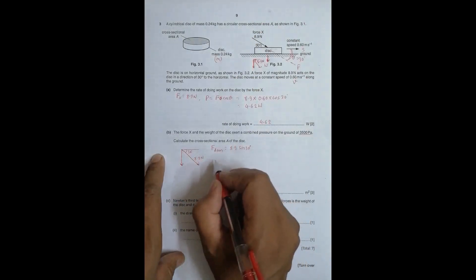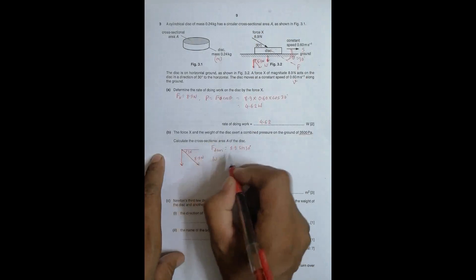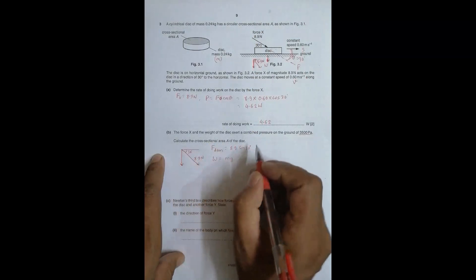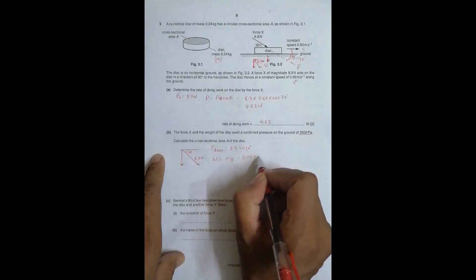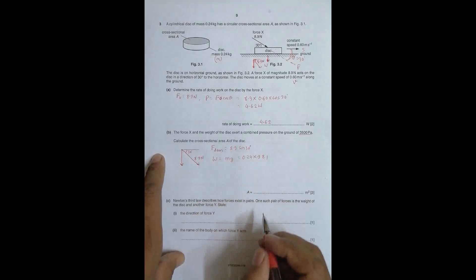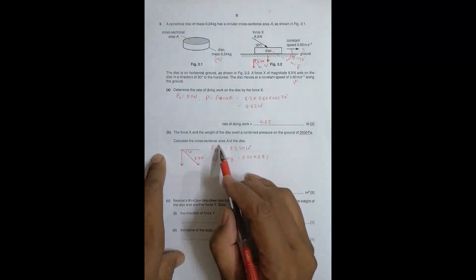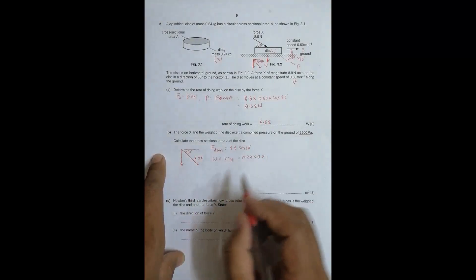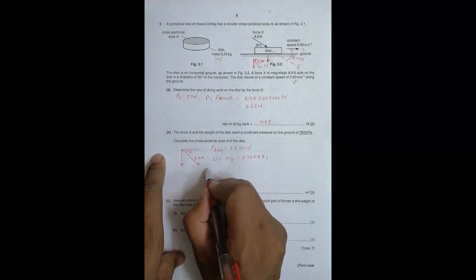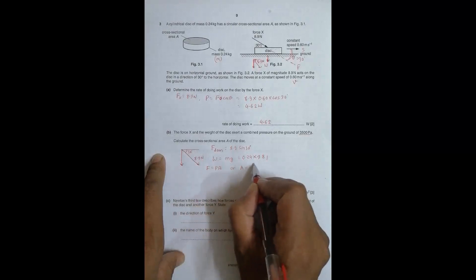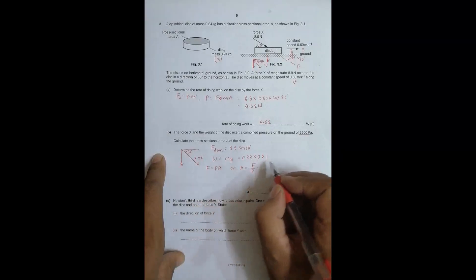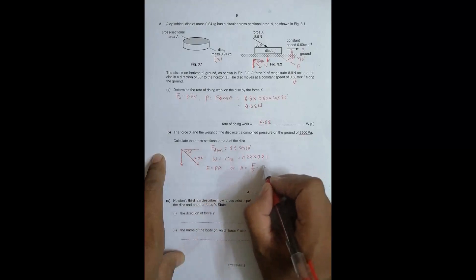The other is the weight of the disk. Weight = M × g = 0.24 × 9.81. So this force and this force create a pressure. We have Force = pressure × area, or Area = Force / pressure, which equals the total of these forces divided by pressure.